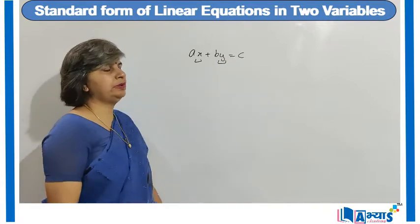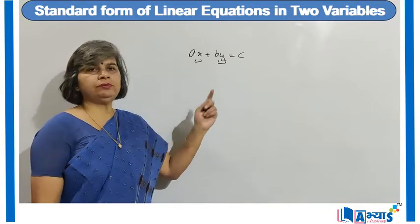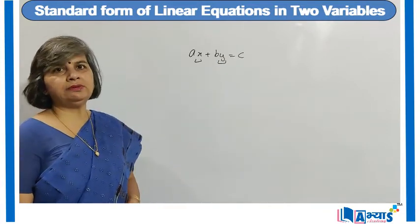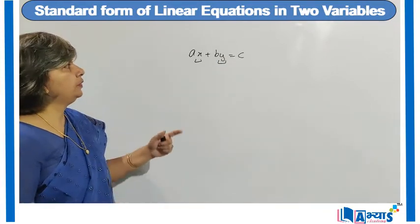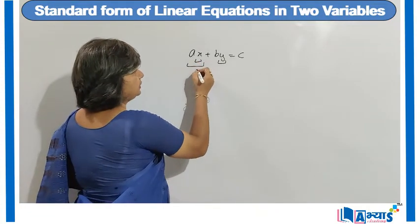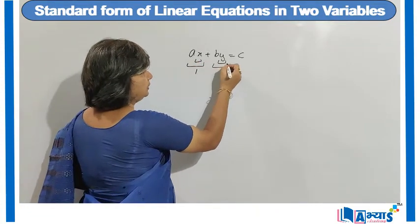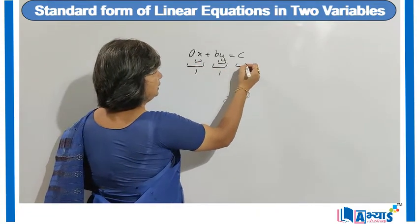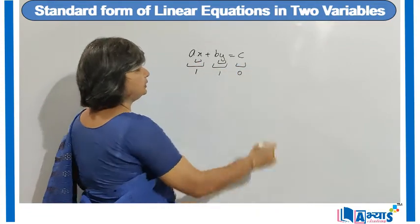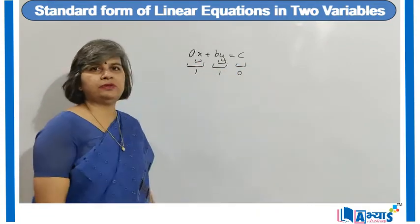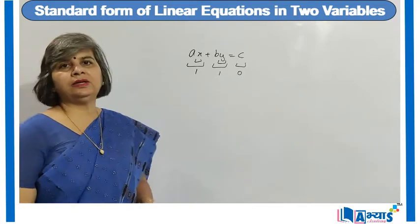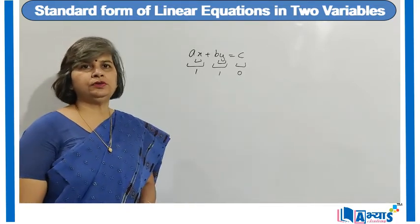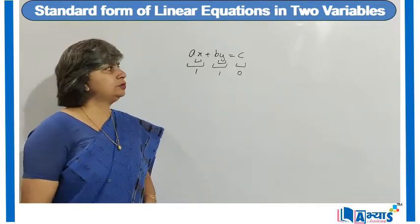It is an equation because it has an equal to sign. Further, the degree of this term is 1, this is 1, and this is 0. So the highest degree is 1. Therefore, we can say it is a linear equation in 2 variables.